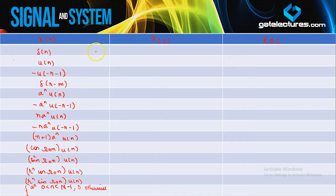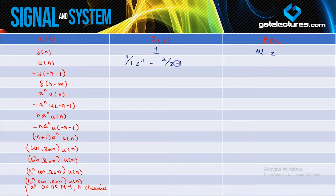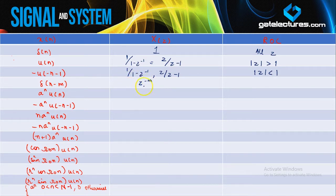We have put all the basic signals in a single table so that you can just refer to it whenever you need the Z-transform of these basic signals along with their ROC. For the unit impulse signal, Z-transform is 1 with ROC the entire z-plane. For u(n), it is 1/(1−z^{−1}) or z/(z−1) with ROC |z|>1. For the unit step signal occurring from n=−∞ to 0, the expression is the same but ROC is |z|<1. For a shifted impulse δ(n−m), the Z-transform shifts by z^{−m} with ROC all z except 0.